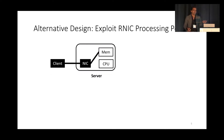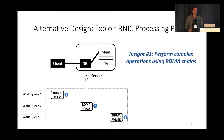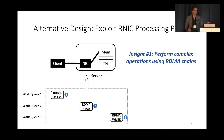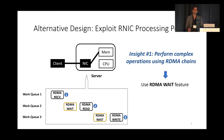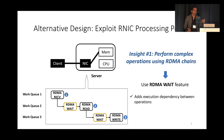The alternative design that we're proposing is to try to exploit the RDMA NIC's processing power. To do so, we basically propose the idea of performing complex operations by using so-called RDMA chains — RDMA operations posted on your work queues used to perform more complicated functionality. We propose using a verb called RDMA weight, which is not very well-known or well-documented, and it's proprietary to NVIDIA's NICs. The benefit of RDMA weight is that it allows you to add execution dependencies between your RDMA operations, so the output of one RDMA operation can become the input of another.